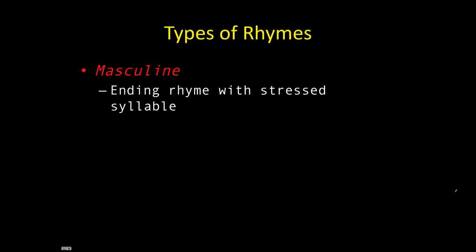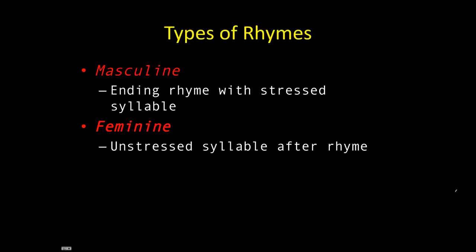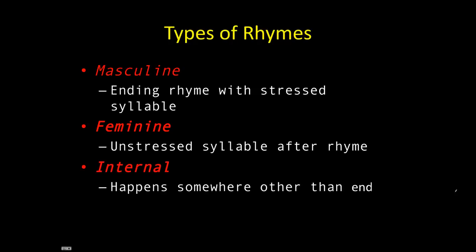Some more types of rhymes are masculine rhymes, which means that the ending of the two words that rhyme is a stressed syllable. There are feminine rhymes, which end with an unstressed syllable. And there are internal rhymes, where the rhyme happens somewhere other than the end — for example, in the middle of the line.